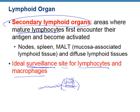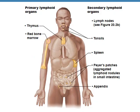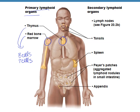The secondary lymphoid organs are lymph nodes, spleen, and MALT — mucus associated lymphoid tissue. Your appendix and tonsils are examples of MALT lymphoid tissue. Primary lymphoid organs are the thymus and red bone marrow, where T cells and B cells are created. Secondary lymphoid tissue includes tonsils, lymph nodes, spleen, Peyer's patches, and appendix.